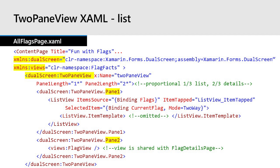Now let's return to the app's root view, which was previously just a list. There are two additional namespaces added to the content page element: XMLNS dual screen, which brings in the dual screen controls, and XMLNS views, which provides access to the shared content view. The page then contains a new two pane view control which includes the list view inside pane 1. This is going to be displayed on all devices — it's still the root view of the app. Pane 2 contains the refactored details FlagView. This pane will only show on larger screens; on a phone it'll be hidden and the flag details will be pushed onto the navigation stack just like the original design.